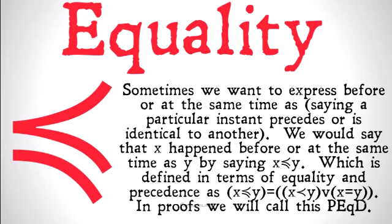Now, sometimes we want to express 'before or at the same time as,' saying a particular instant precedes or is identical to another. We would say that x happened before or at the same time as y by saying x precedes or is equal to y. Note that this should look very similar to the basic mathematical operation of less than or equal to — we're just adding a curved line under it to show that we're still talking about time, which can be defined in terms of equality and precedence as x precedes or is equal to y.